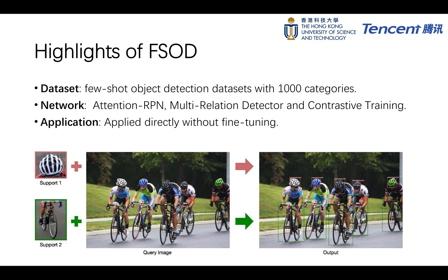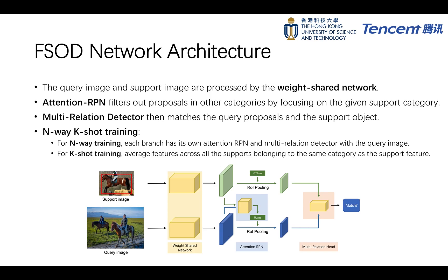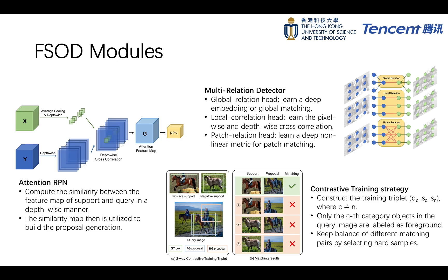To this aim, we introduce a new network with AttentionRPN, Multi-Relation Detector, and a contrastive training strategy. AttentionRPN can filter out objects of non-support categories, the Multi-Relation Detector can produce accurate parsing between objects of support class and background, and the contrastive learning enables the network the ability to distinguish different categories.